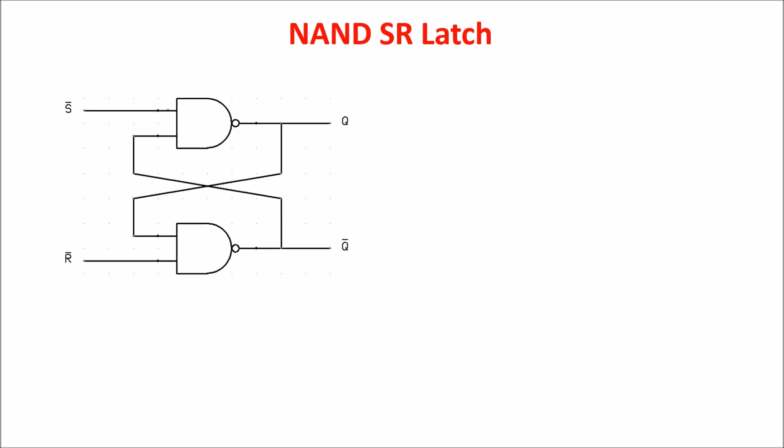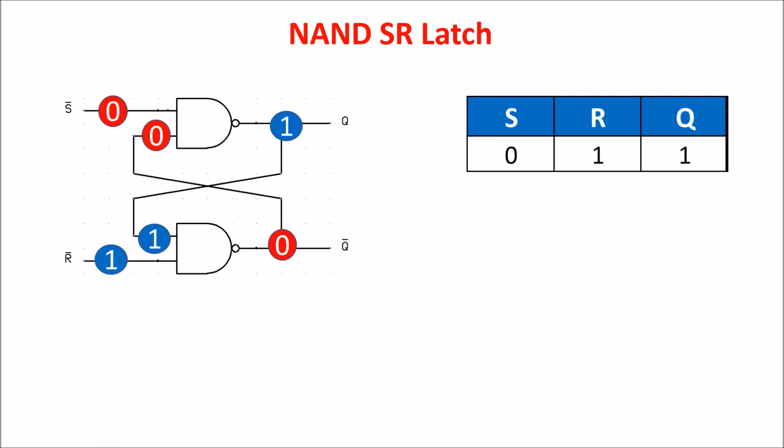Let's see the truth table of the NAND SR latch. The inputs are set and reset and the output is Q. We leave out NOT Q because it's always the opposite of Q. If we give a zero pulse to set keeping reset to 1, we get 1 on the output.